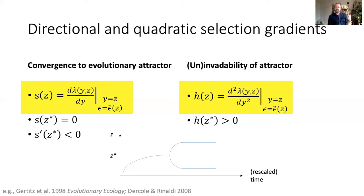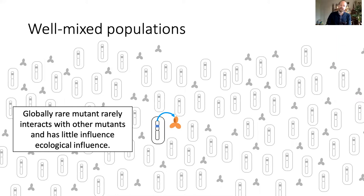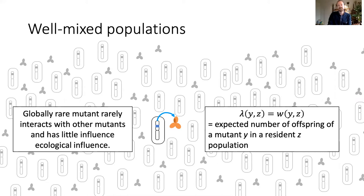Invasion fitness is typically the eigenvalue of a matrix, which can be extremely complicated depending on the model. But in one particular case — when populations are well-mixed, meaning individuals interact like particles in a gas — it is possible to find a simple interpretation for invasion fitness. This is because in a rare mutant in a large well-mixed population, the mutant never interacts with another rare mutant and has little impact on the ecological variable. So in this case, invasion fitness is simply individual fitness: the expected number of offspring of a mutant in a resident population, often called the per capita growth rate.